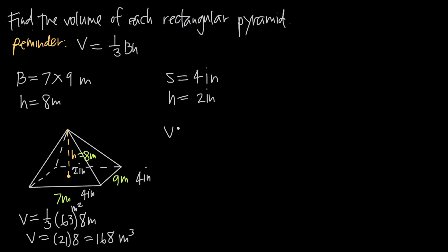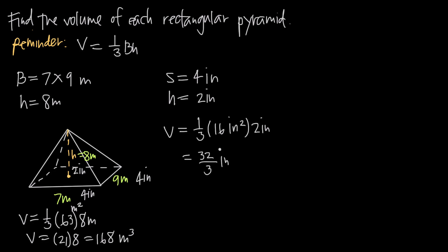We'll apply the same volume formula: volume is equal to one third times the area of the base. Since it's a square, the area is length times width, or four times four, which gives us 16 square inches. Multiplying by the height of two inches gives us 32, so the volume is 32 thirds cubic inches. On a calculator, that's approximately 10.67, or 10 and two thirds cubic inches.